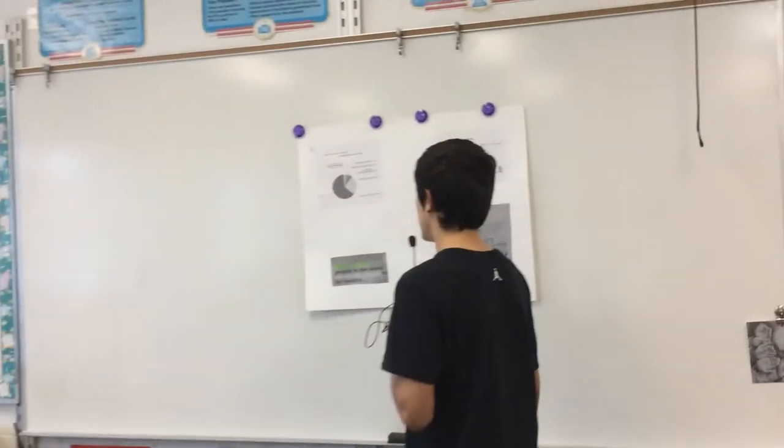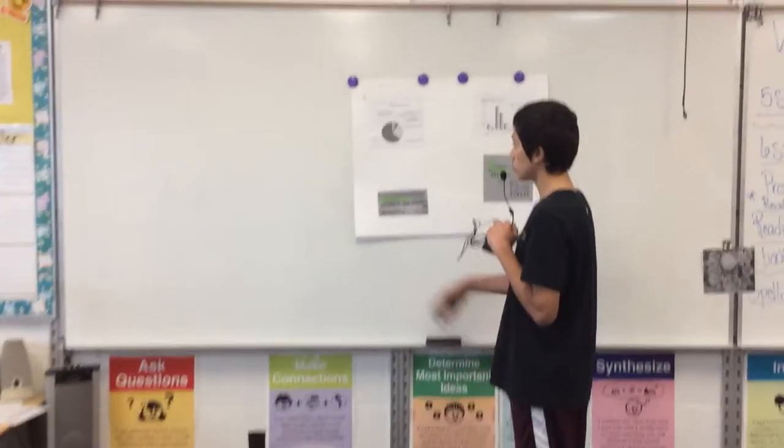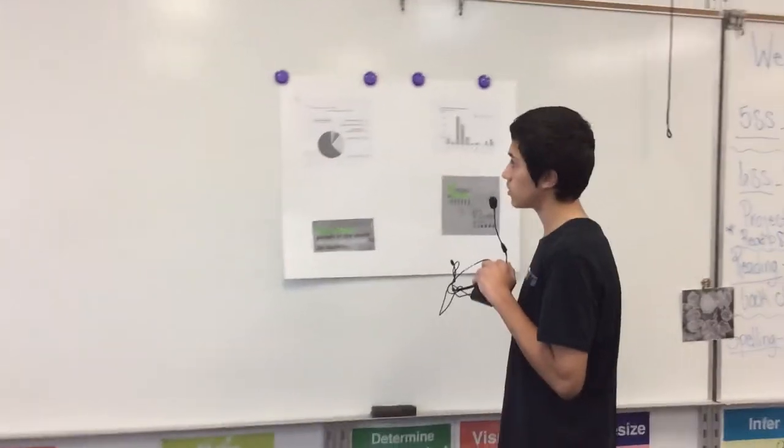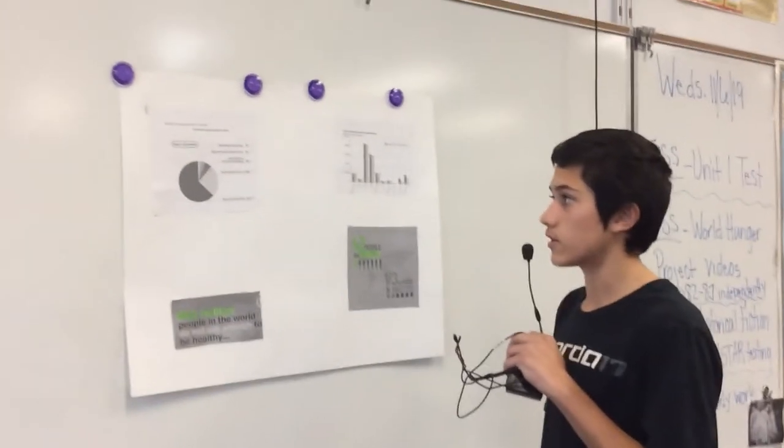Number of hungry people in the world. 925 million hungry people in 2010. Total 925 million. Developed countries have 19 million. Near East and North Africa have 37 million.